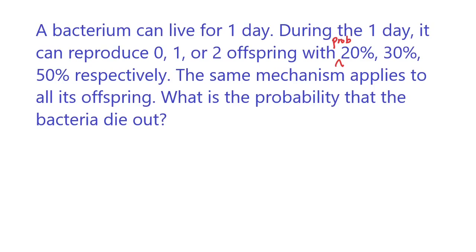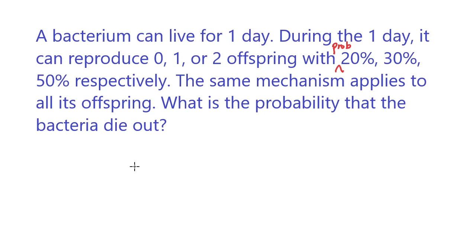A bacterium can live for one day and then after one day it's going to die. During that one day it can reproduce zero, one, or two offspring with probability 20%, 30%, and 50% respectively. The same mechanism applies to all offspring — each offspring created has the same probabilities and can only live for one day. What is the probability that the entire bacterial population dies out?